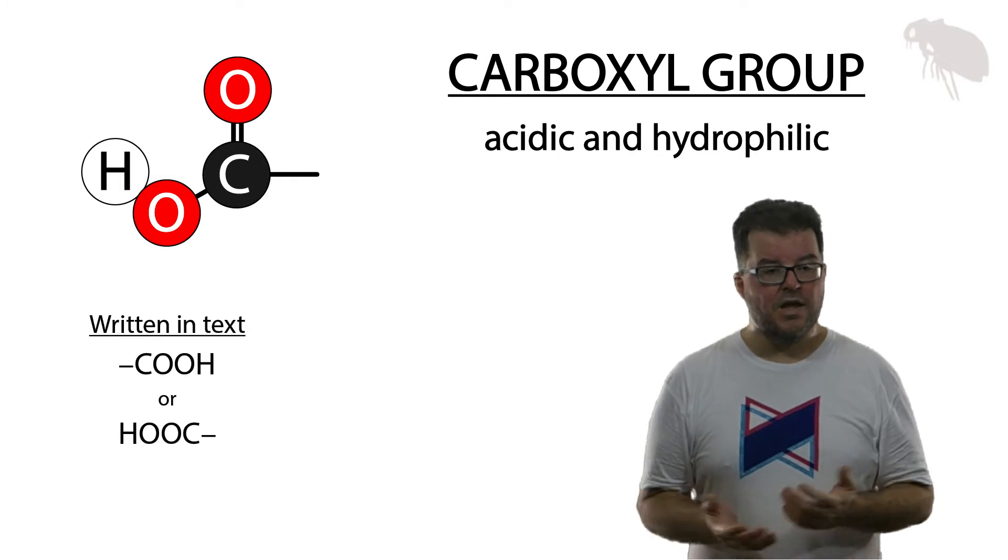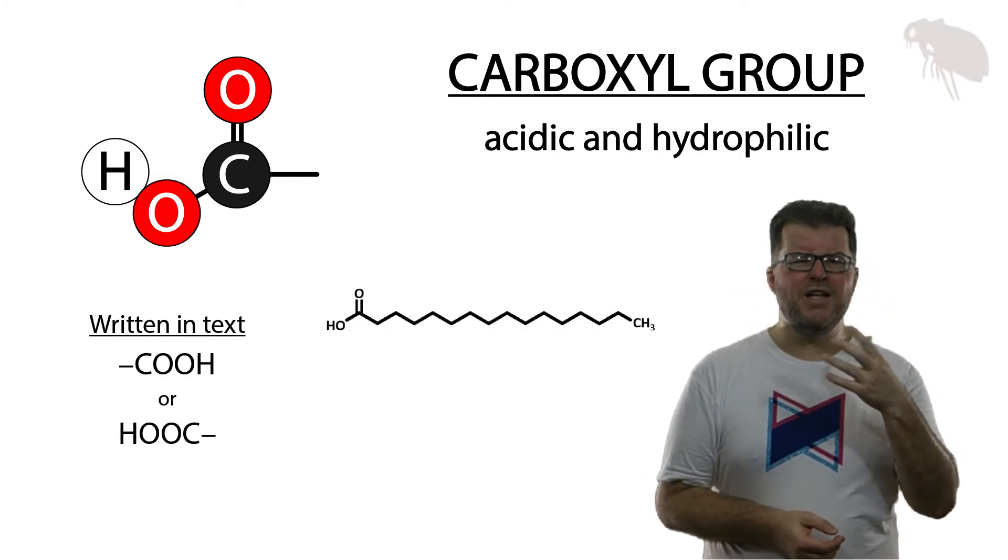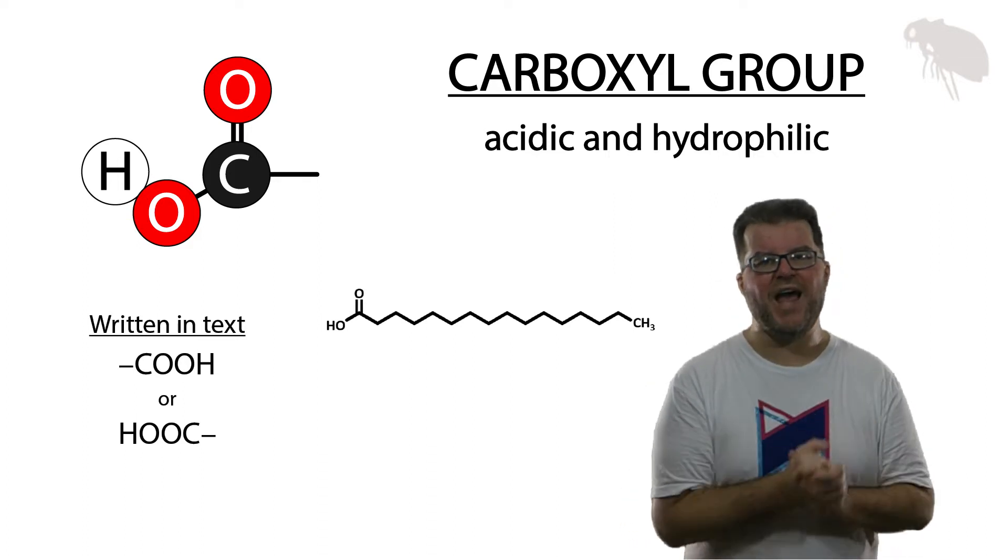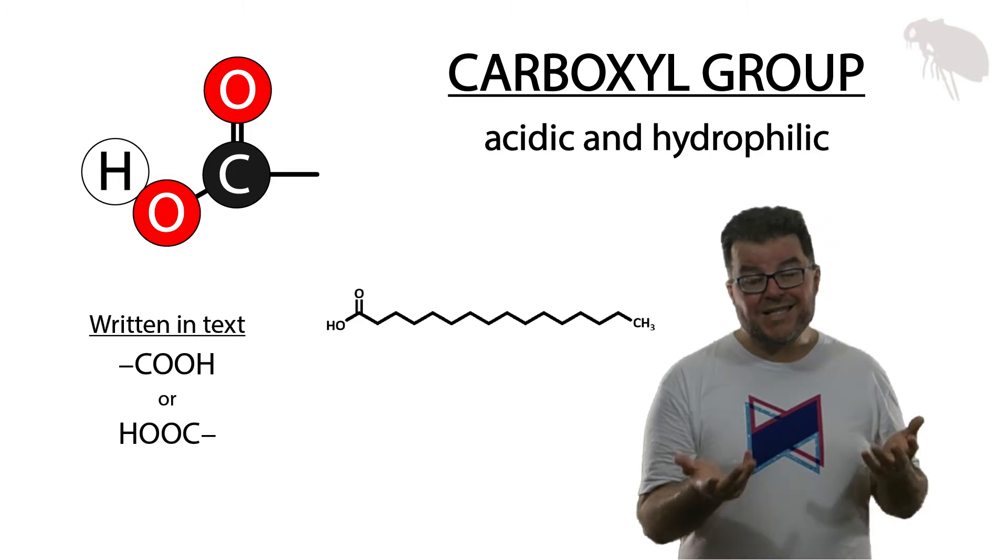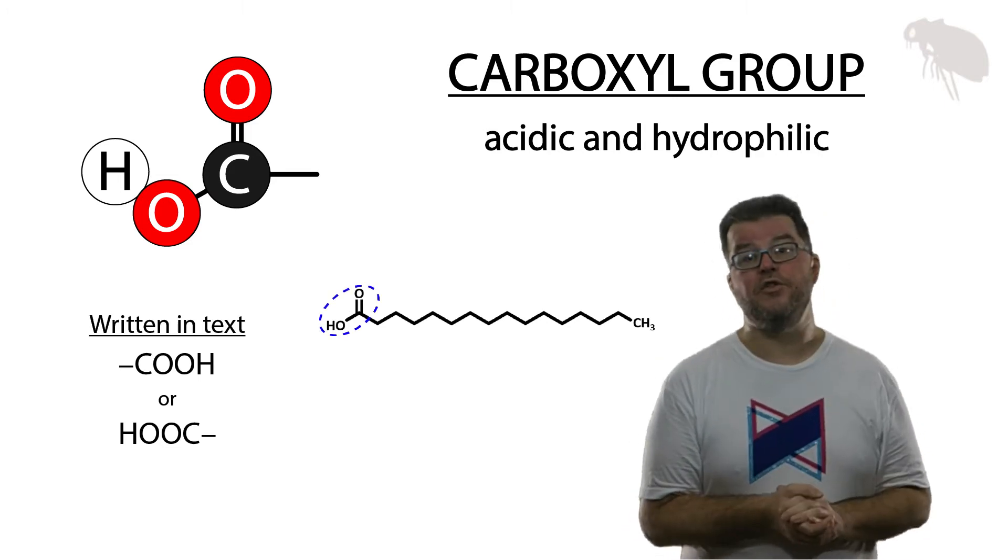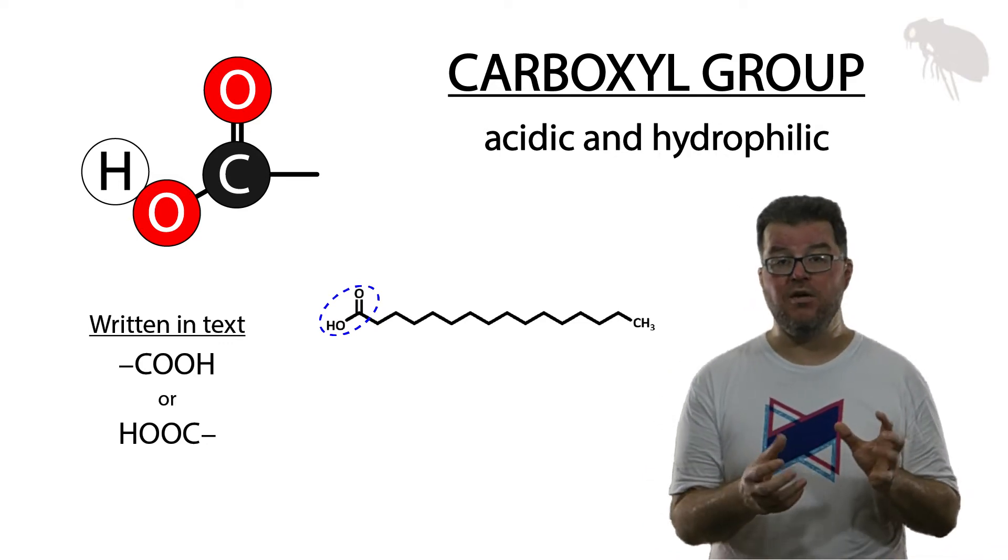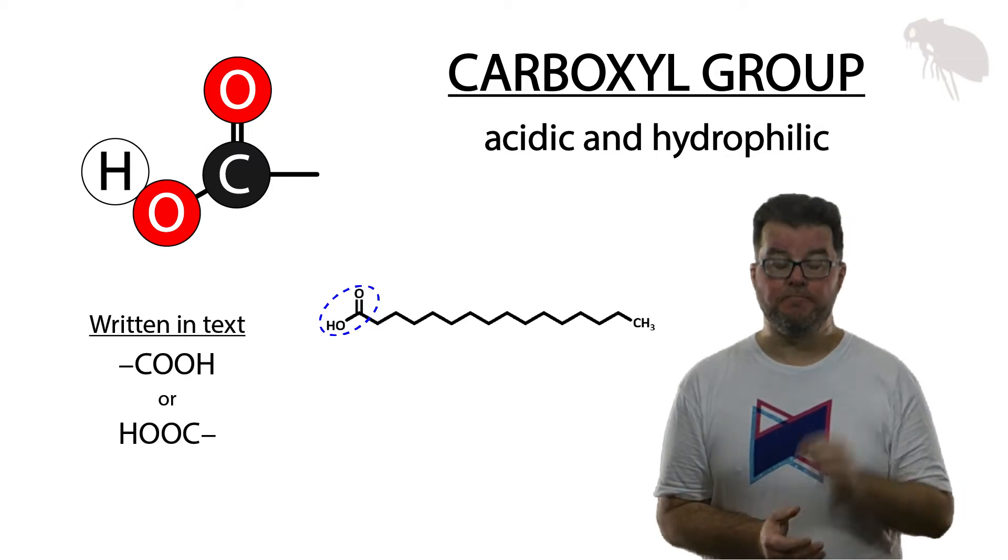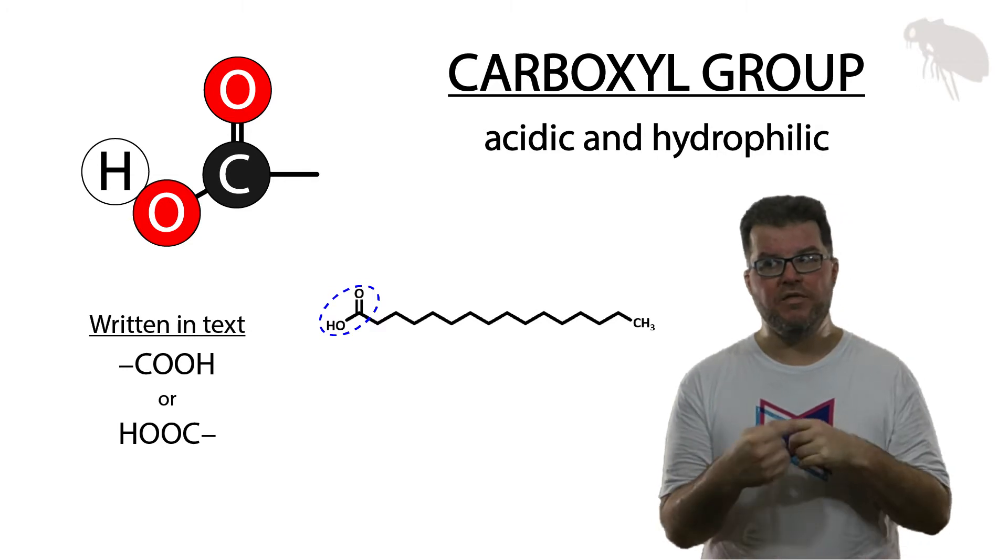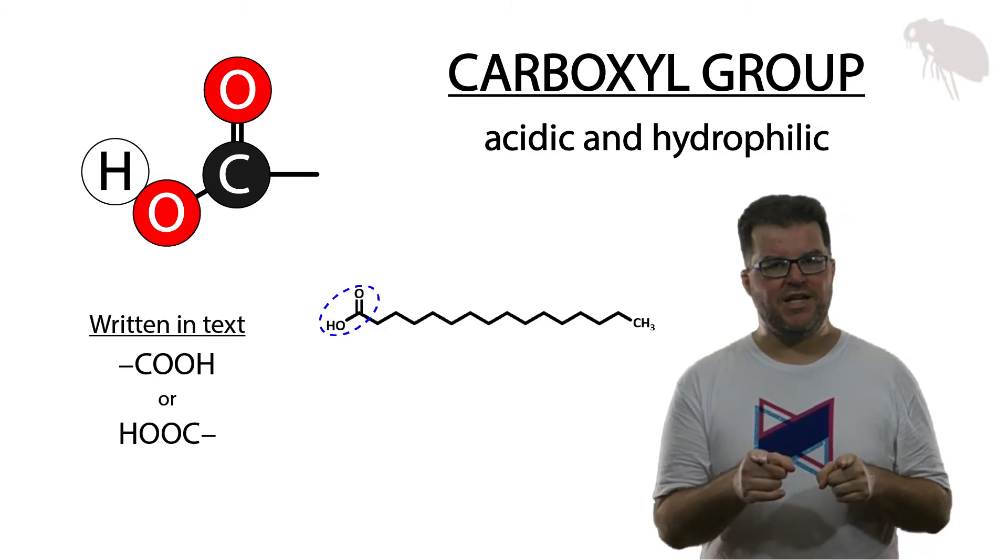As an example, here's palmitic acid. It's found in palm oil, but it's found in a number of other oils as well. It's a fat or a fatty acid, and you can see this molecule has a carboxyl group all the way over at the other end. It's called a fatty acid because it's got that fatty hydrocarbon tail and an acidic carboxyl. In fact, most organic acids actually have the word 'acid' in their name to go with the carboxyl group that makes them acidic.